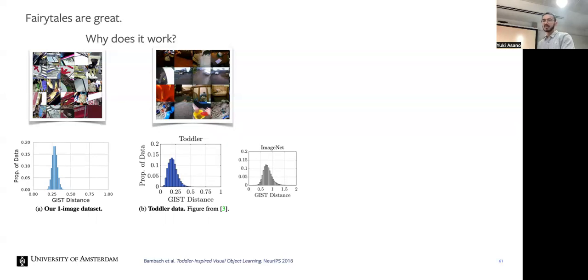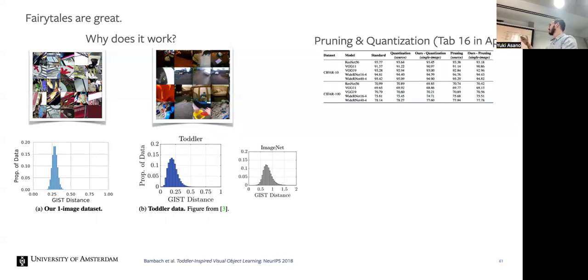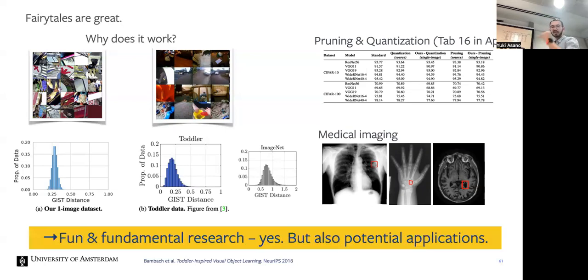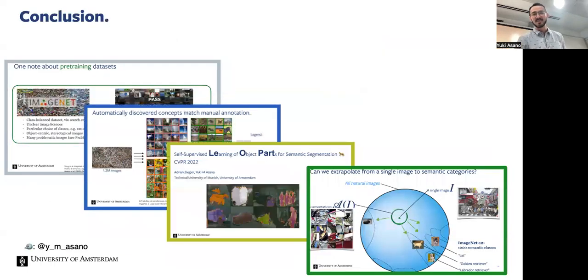We also show that you can actually use a single image for pruning and quantization of pre-trained models. It's Table 16 in the appendix if you want to know. Thinking about also being able to apply to medical imaging where sometimes you actually don't have large datasets but you have for example one huge image. So it's fun and fundamental research, but it definitely does have some potential applications. This work finally got accepted to ICLR 2023. You can ask me all about the funniest and most annoying reviewer 2 comments that this paper has gotten on its way there, but yeah, glad it's accepted now.